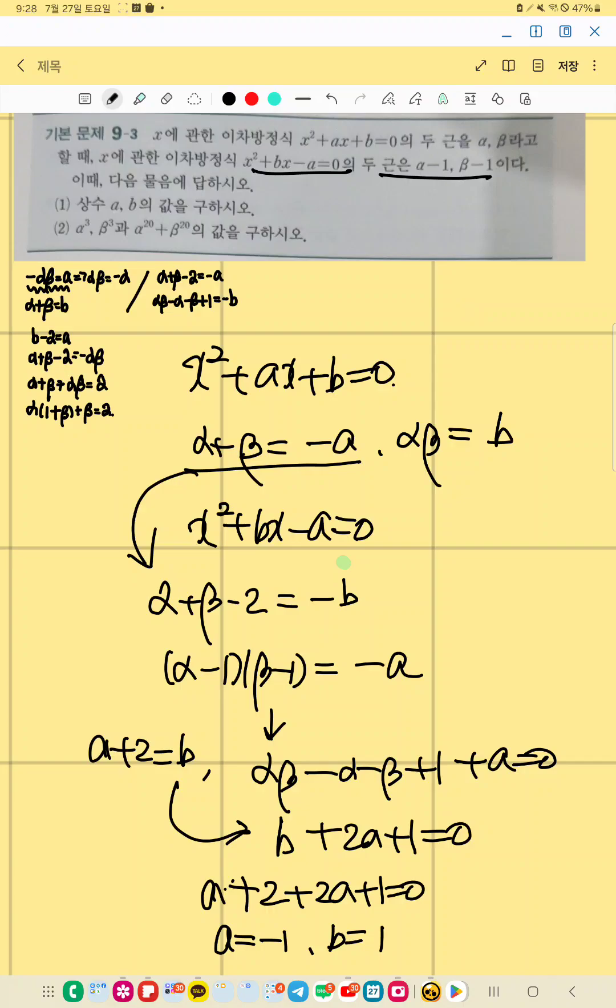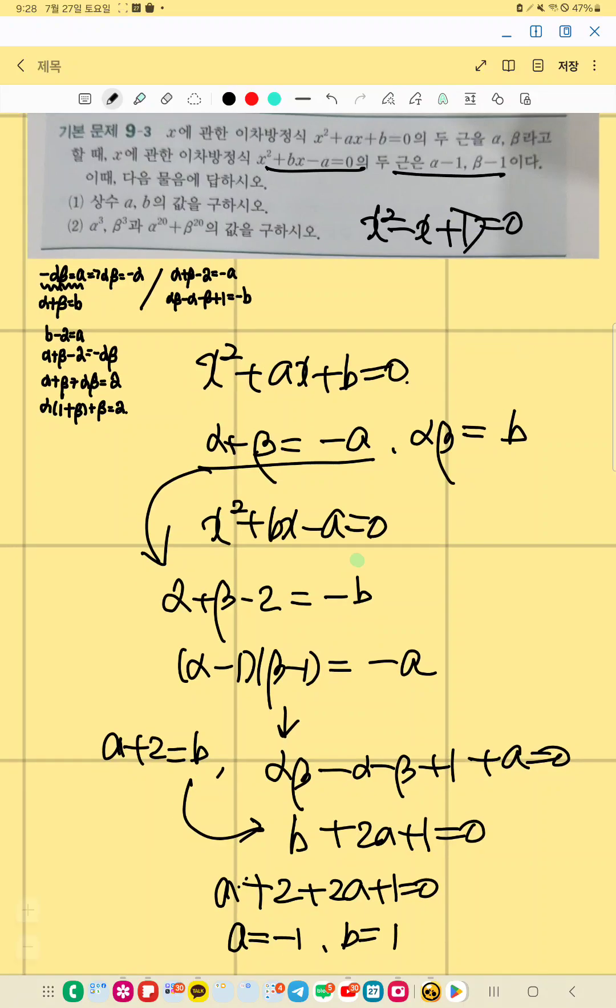So X square minus X plus 1 equals 0. So we can multiply X plus 1 at both sides. We get X cube plus 1 equals 0. Right? So alpha to the power of 3 or beta to the power of 3 is also negative 1.